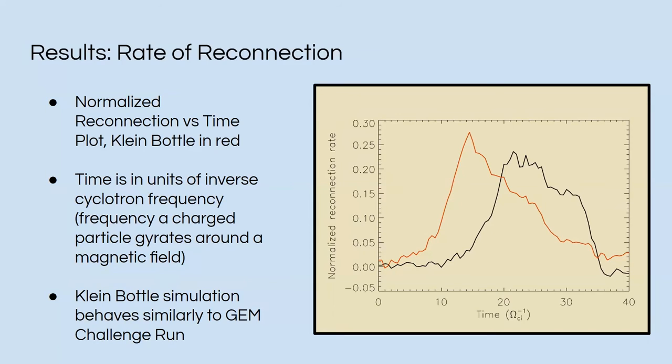And here are some of the results. So in red, we can see the rates of reconnection on this slide. We can observe that both the behaviors follow a similar behavior in the sense that they spike up and then slowly drop back down. On the graph, you can see time is in units of inverse cyclotron frequencies, and on the y-axis is the reconnection rate.